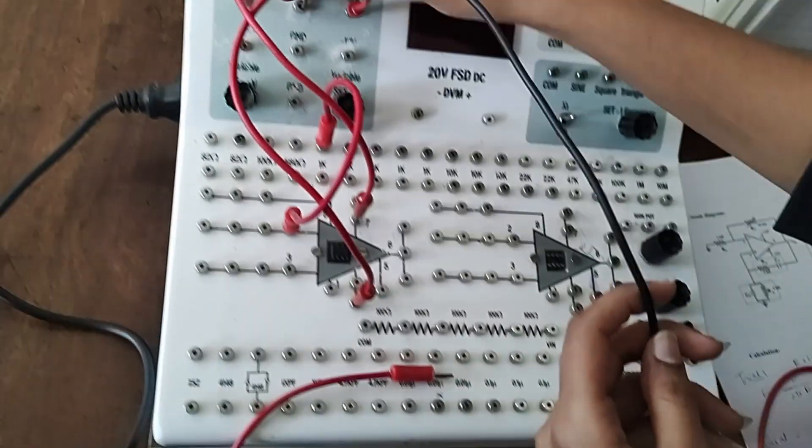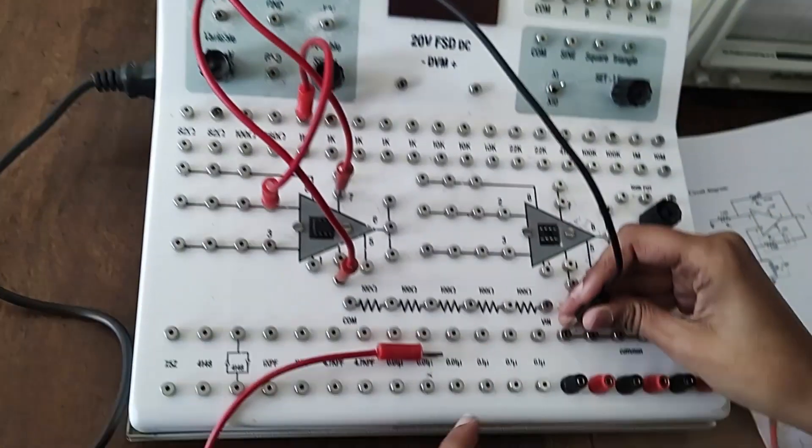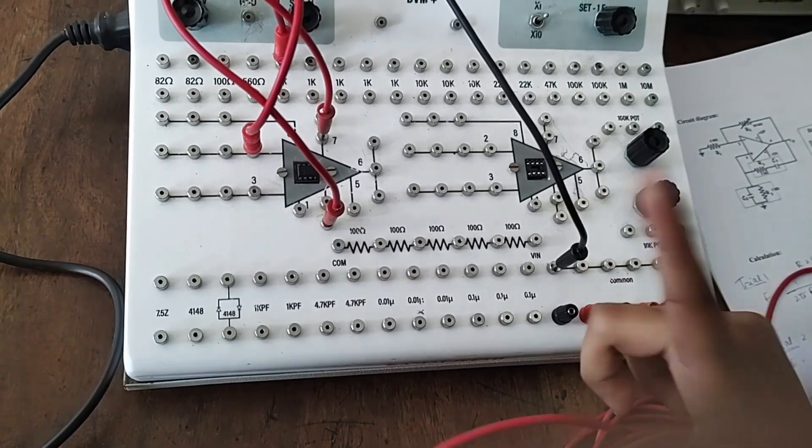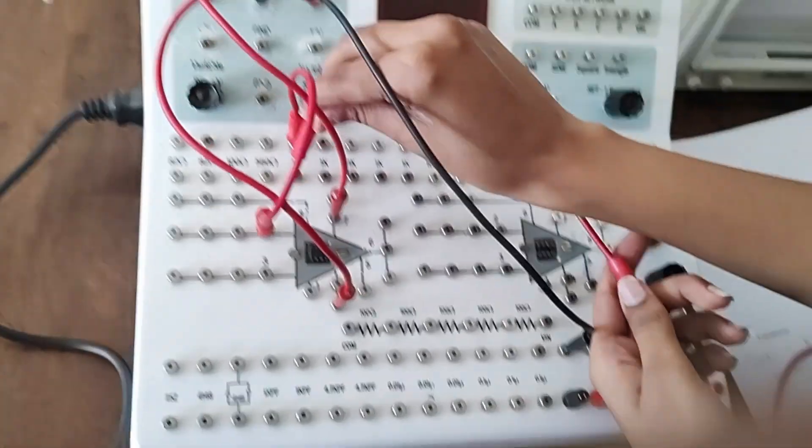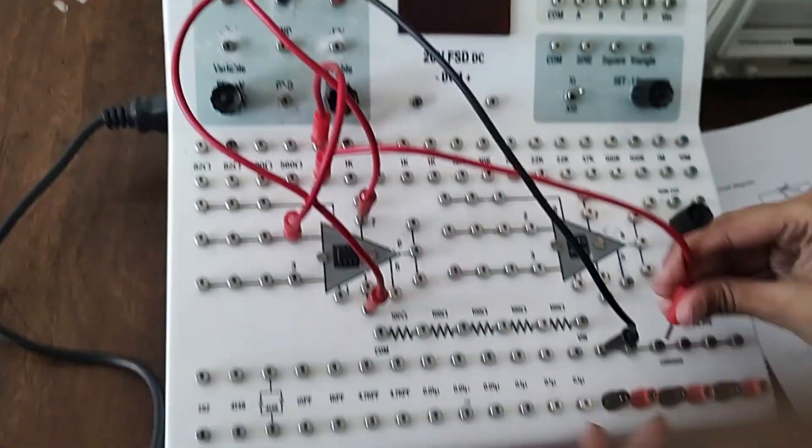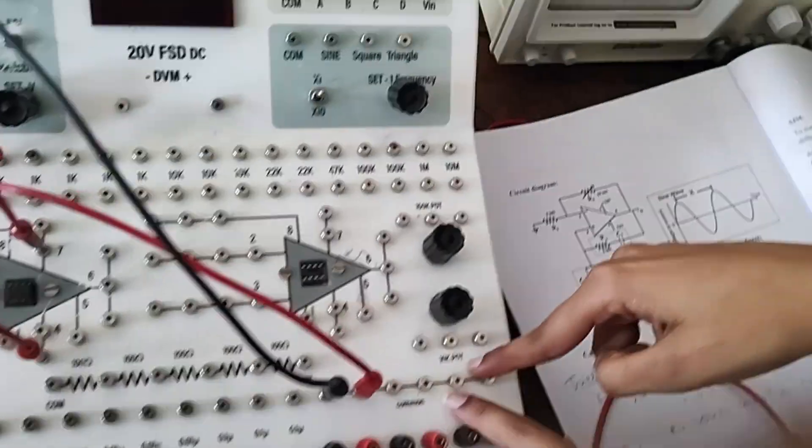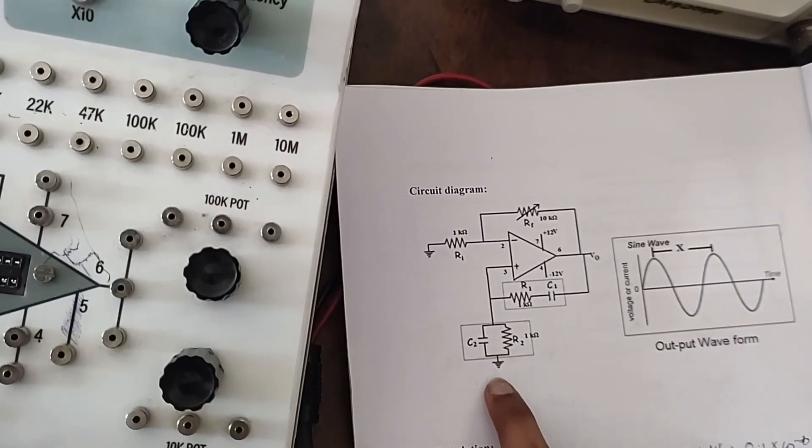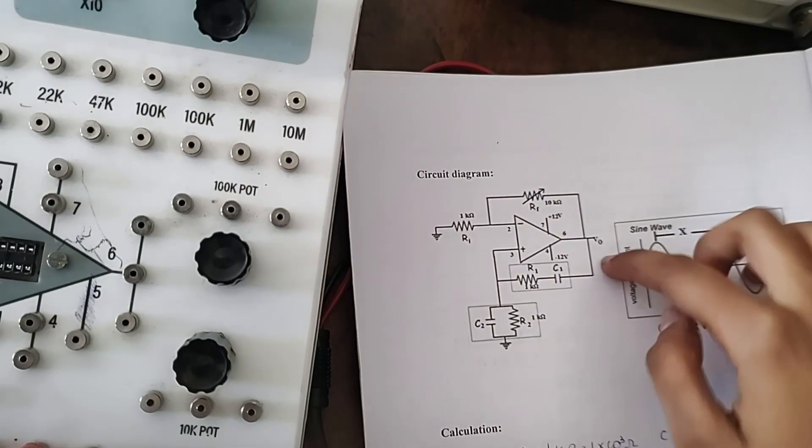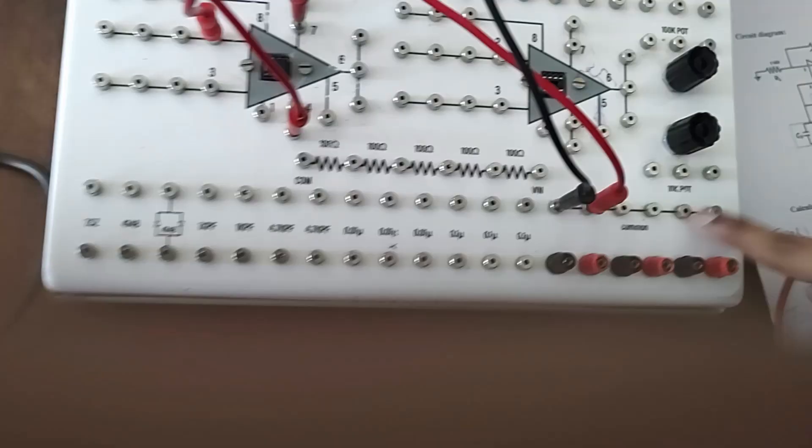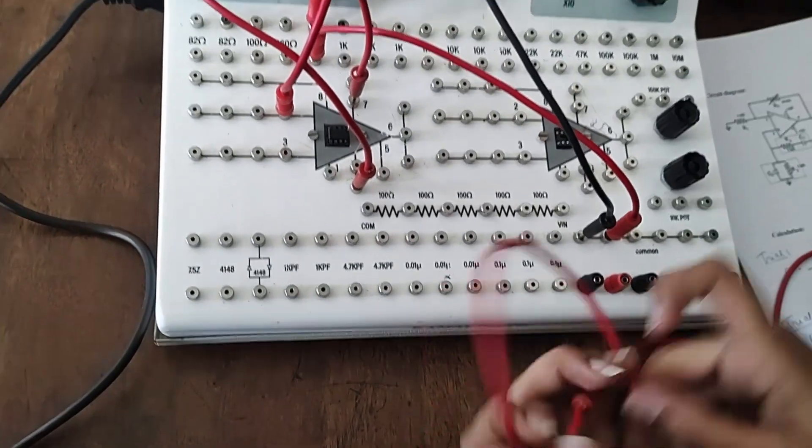Now we'll go from this 1k to this common ground. This will be our ground connection for all these—this ground, this ground, and then the output ground will be this common ground. And then we'll go from 2...